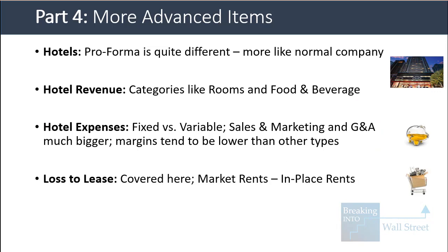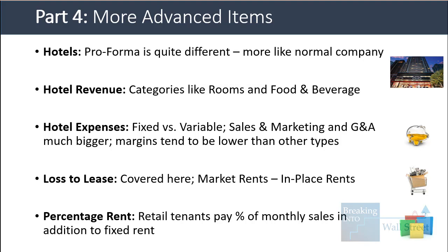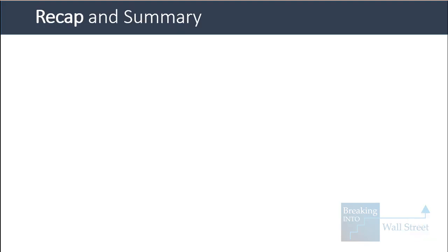A few more advanced items on the pro forma: loss to lease, which we already covered, represents the difference between market rents and in-place rents. There's also percentage rent, where retail tenants pay a percentage of their monthly sales in addition to fixed rent — often used as a negotiating tactic to set up leases, where a tenant might agree to lower fixed rent in exchange for paying more in percentage rent, or vice versa. That's it for this lesson.